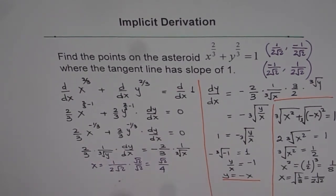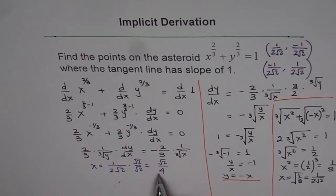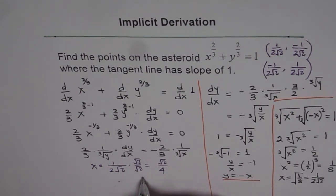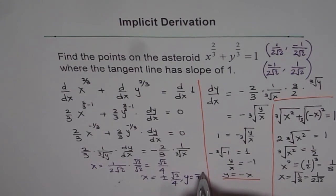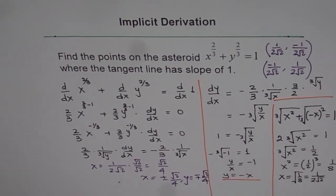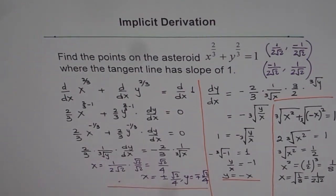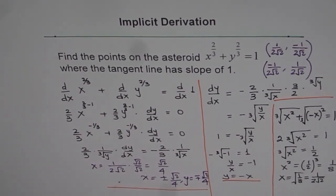We can rationalize by multiplying by square root two over square root two, giving square root two over four. So the points are where x equals plus or minus square root two over four, and y equals minus or plus square root two over four. I hope you understand how to do these kinds of problems and work with radicals when finding points. This is a pretty good example — do it on your own and try to understand the logic. Thank you.